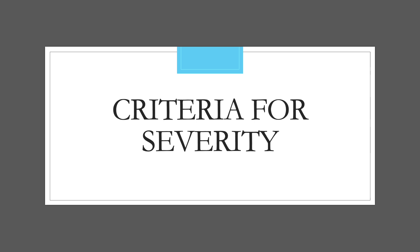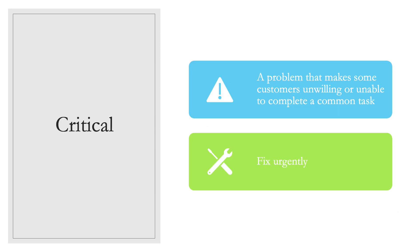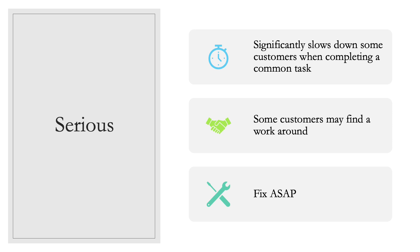There are four different levels of severity. First are critical issues — the most important to address. These are problems that make some customers unwilling or unable to complete a very common task on the website, and you want to fix them urgently. Second, below critical, are serious issues. These significantly slow down some users when completing a common task, and some customers may find a workaround. These need to be fixed as soon as possible, but not before the critical issues.